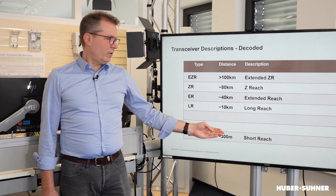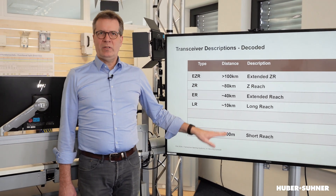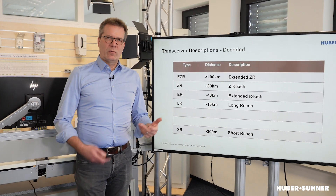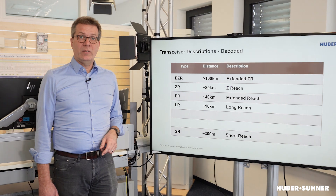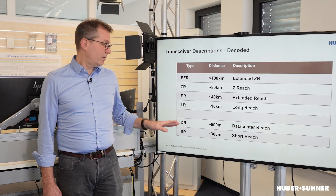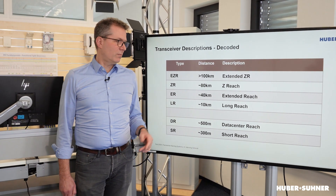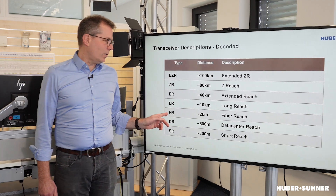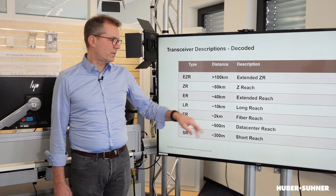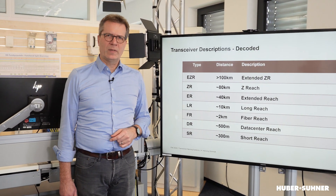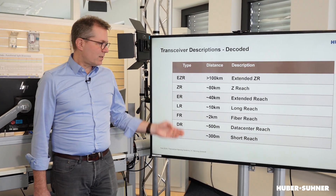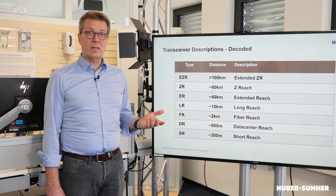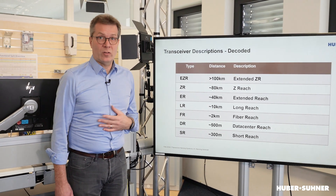EZR, extended ZR, is already being used for everything beyond 100km. There is a little bit of a gap between 1km and 10km, and with the growth of higher data rates, especially in data centers, DR starts to be used — people read it as data center reach. FR is also used for distances in the middle. Again, this is a system of description for achievable distance under ideal circumstances.